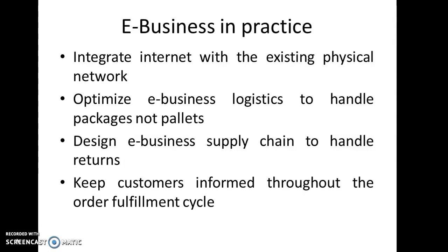The second task is to optimize e-business logistics to handle packages rather than pallets. Packages handle products in smaller numbers — for example, one, two, or three items — while pallets hold many products, perhaps 20, 40, or 50. In e-business logistics, it is better to handle packages because products can be delivered directly to customers. The third task is to design the e-business supply chain to handle returns, so that if a customer is not satisfied or there is a problem with a product, they can comfortably return it.